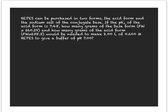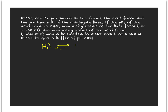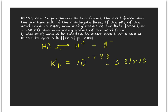To work our problem, we will use the abbreviated form. We have an equilibrium: HA, the acid form of HEPES, is in equilibrium with the hydrogen ion in solution and the conjugate base ion, which is the basic form of HEPES. The pKa is 7.48, so the Ka is equal to 10 to the minus 7.48, which is equal to 3.31 times 10 to the minus 8th.